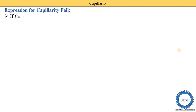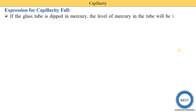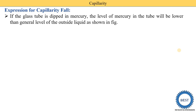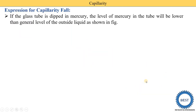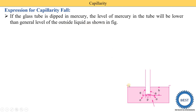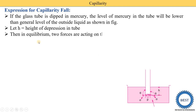Next is the expression for capillary fall. If the glass tube is dipped in mercury — for capillary fall we consider the liquid to be mercury. In the container we have mercury, and the level of mercury in the tube will be lower than the general level of the outside liquid. This is called capillary fall or capillary depression. Let h be the height of depression or fall in the tube.